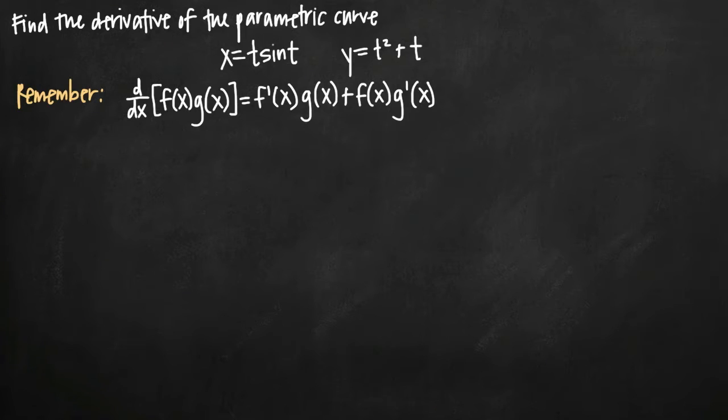Today we're going to be talking about how to find the derivative of a parametric curve. In this particular example, we've been given the parametric curve defined by these two functions: x equals t sine of t and y equals t squared plus t.